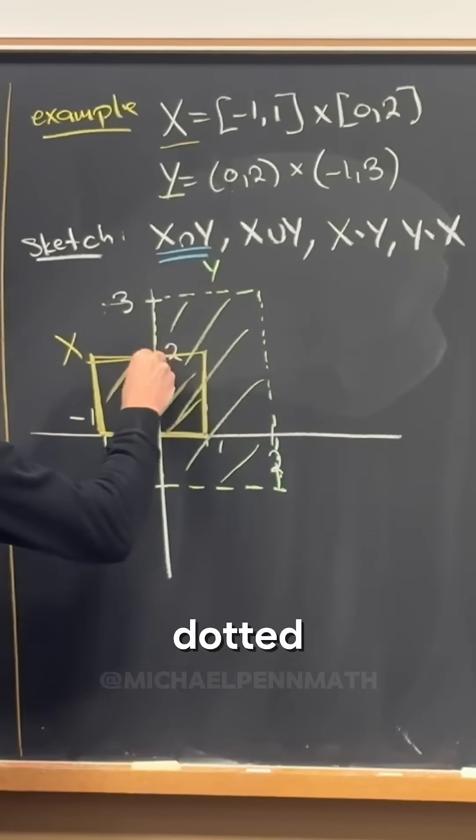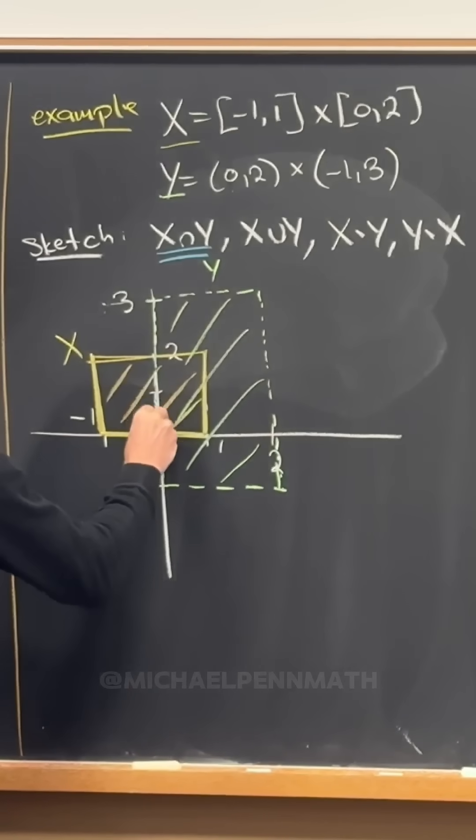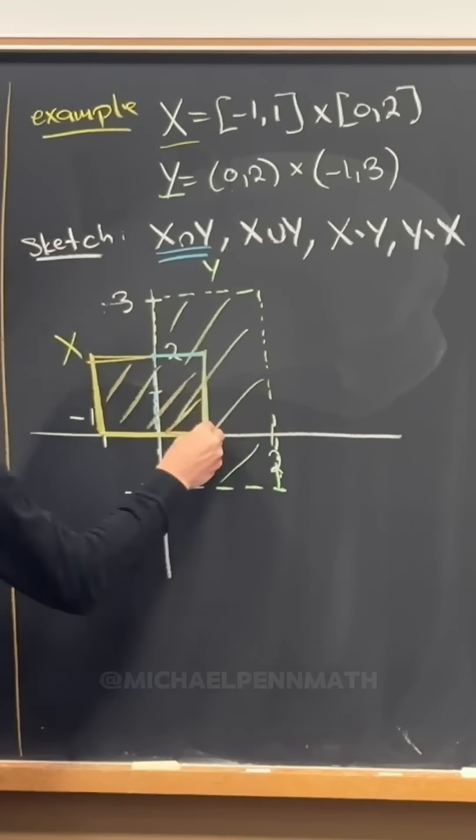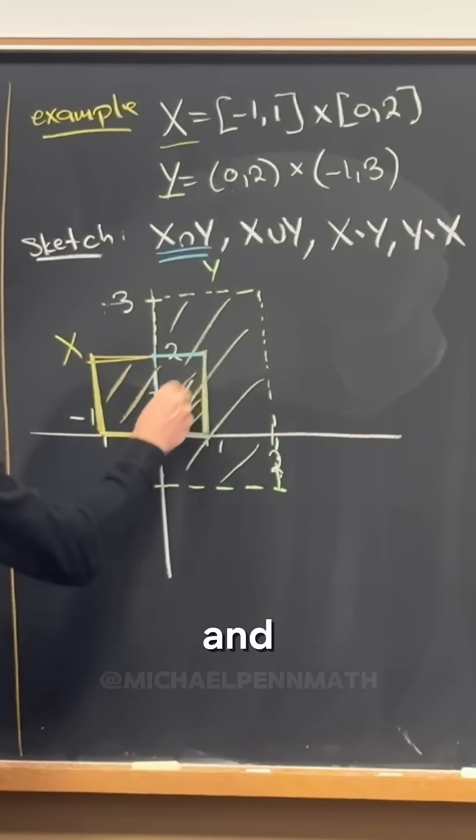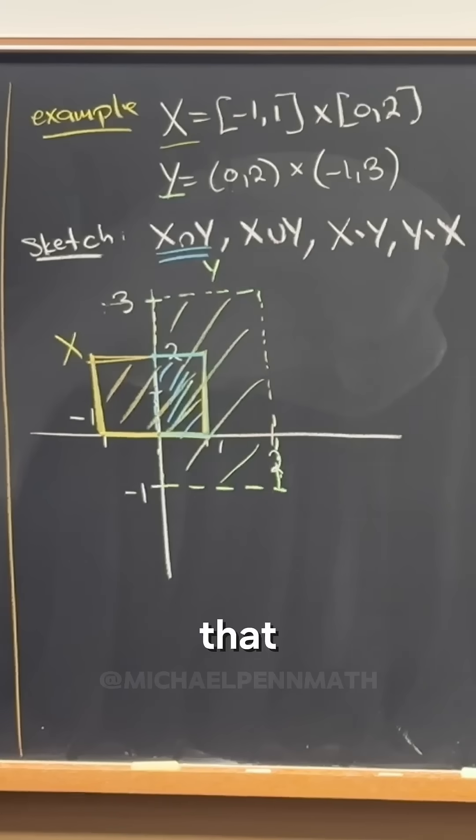So that's going to be dotted right here. And then it's going to be solid right here. And then it's shaded in like that. So that's the example of the intersection.